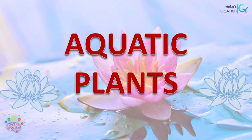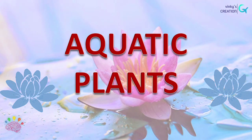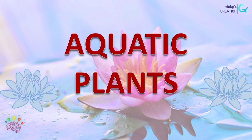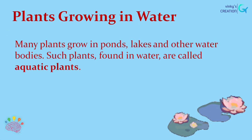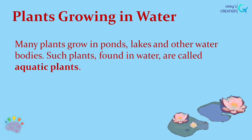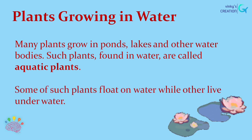Hello everyone. In this video, let's see about different types of aquatic plants with the help of pictures and examples. Many plants grow in ponds, lakes and other water bodies. Such plants found in water are called aquatic plants. Some of these plants float on water while others live underwater.